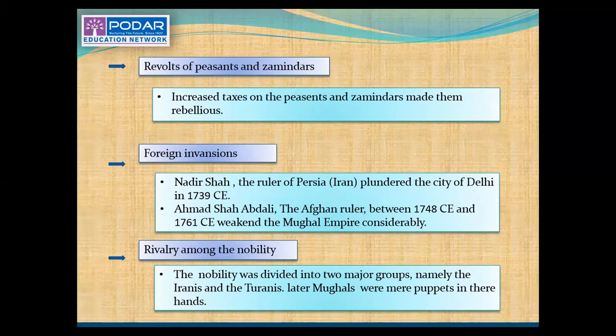The next point is rivalry among the nobility. The nobility was divided into two major groups, namely the Iranians and the Turanians. The Later Mughals were mere puppets in their hands.